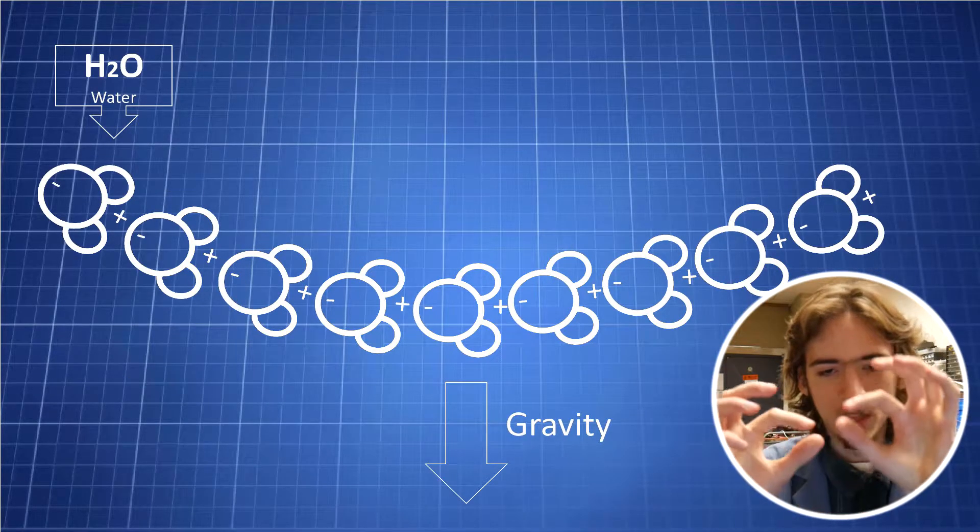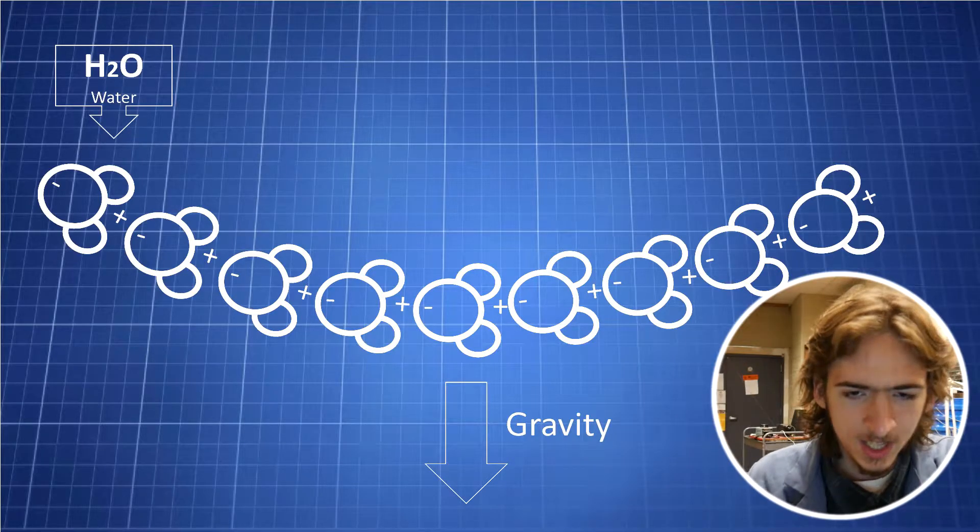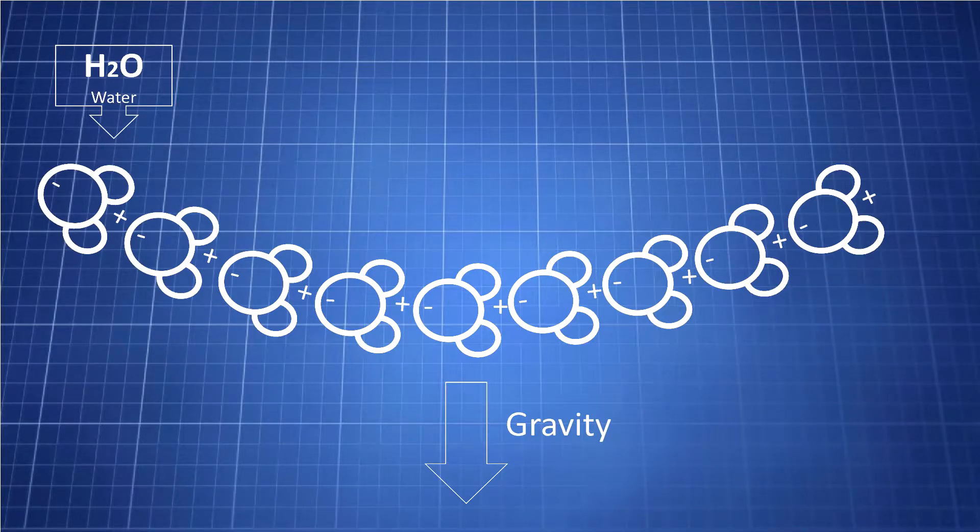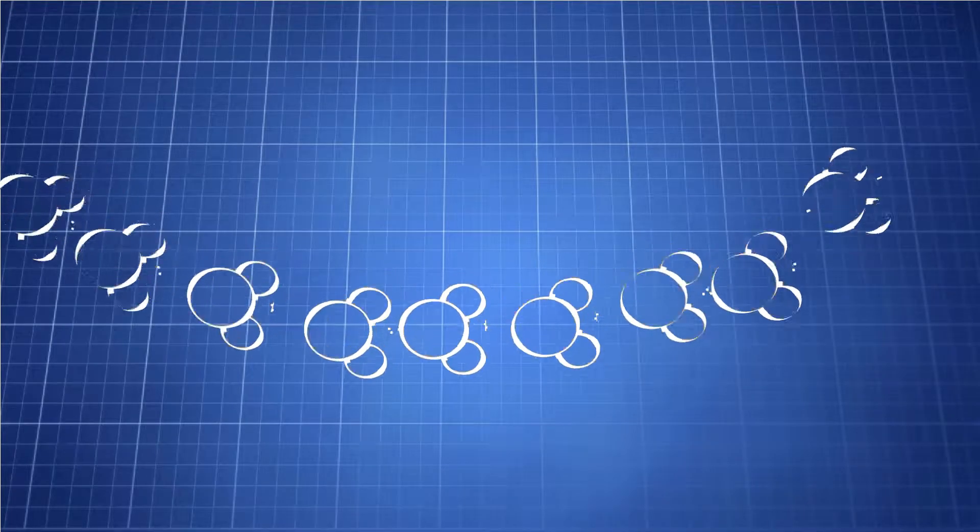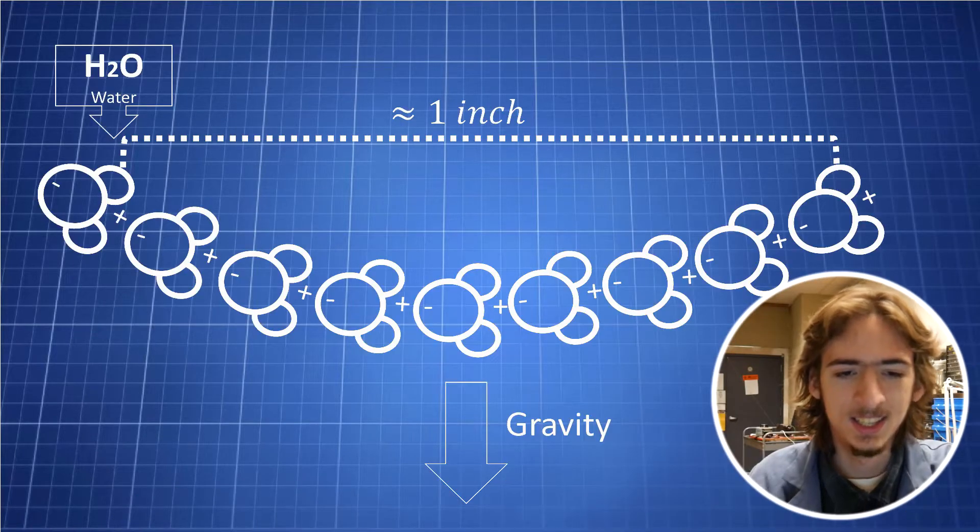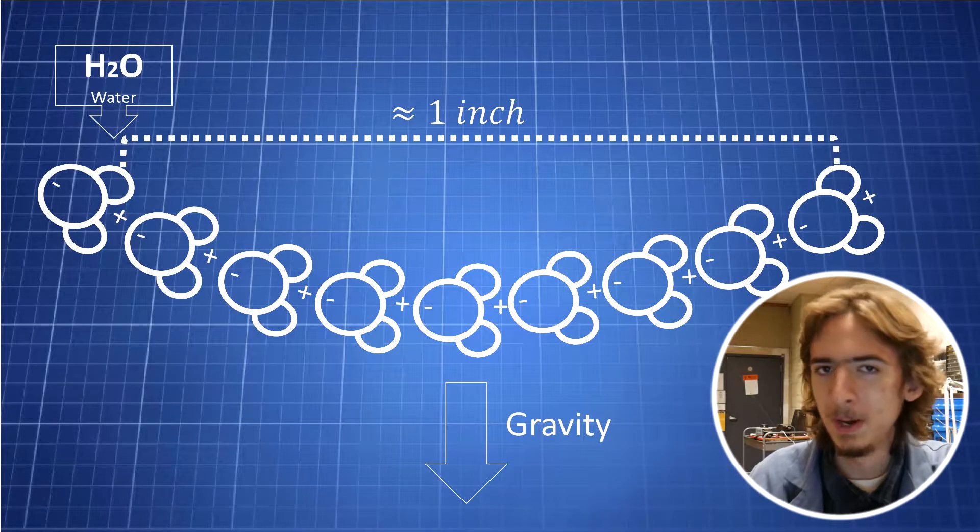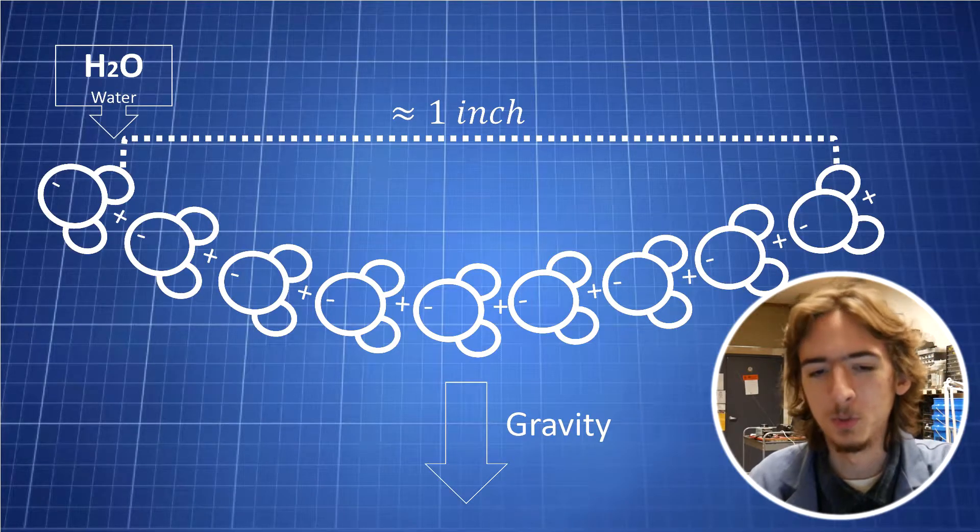So imagine you were making a long string of magnets. Once it gets too long, the attraction isn't enough to hold up its own weight, so it falls. Only the water molecules are being held together electrically, not magnetically. And the maximum length it can go is about an inch before it collapses under its own weight.